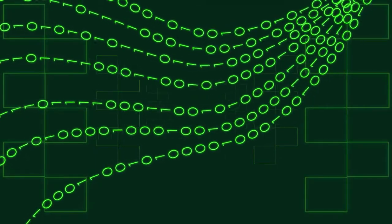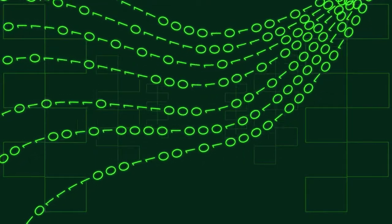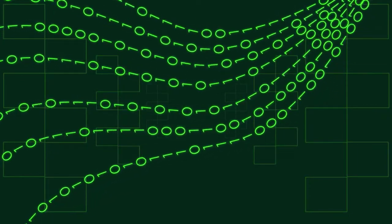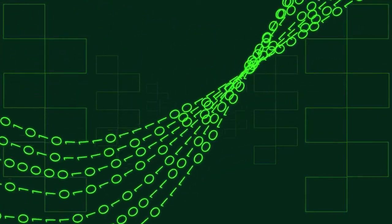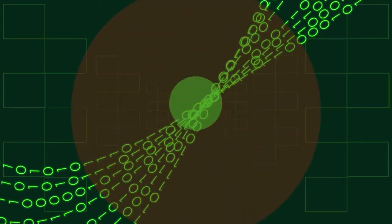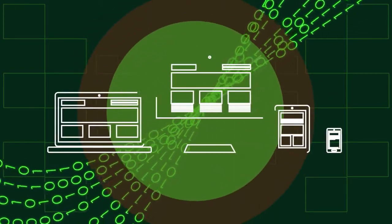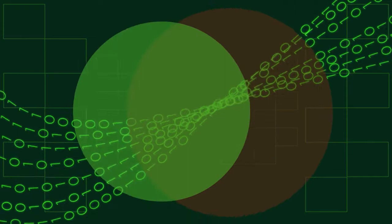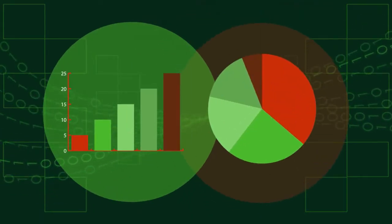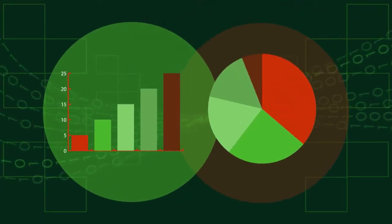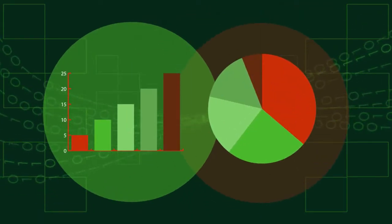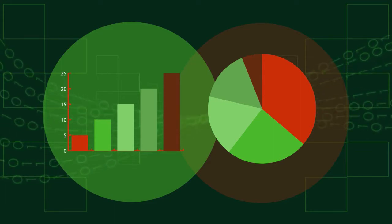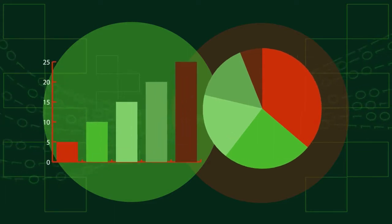Data. Nowadays information is being collected on everything. We have data coming out of our ears. These numbers might be showing us something very meaningful, but who can really tell? This is where bar graphs and pie charts come into play. They are really great for displaying data, helping us to easily make comparisons.